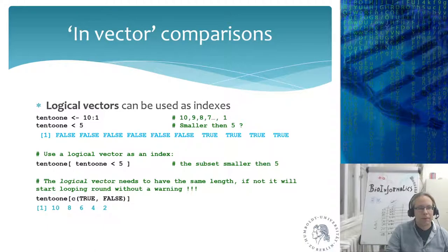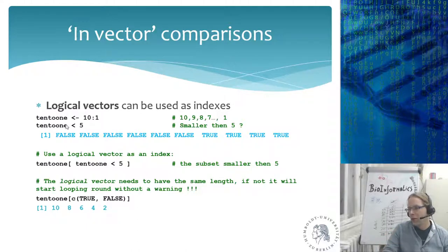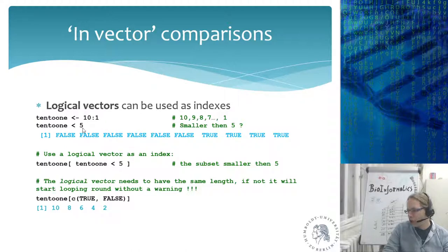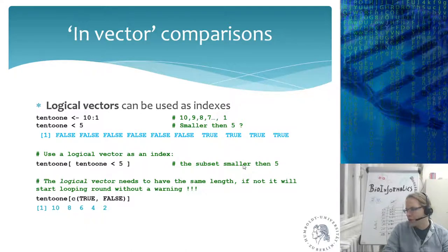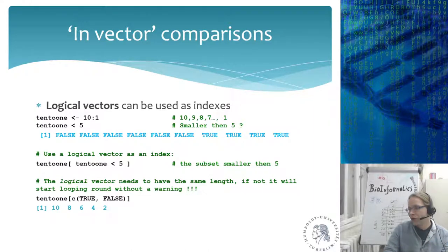You can use logical vectors as an index into another vector. For example, 10:1 < 5 gives FALSE FALSE FALSE FALSE FALSE FALSE TRUE TRUE TRUE TRUE, and you can use this directly to subset the vector and get only elements smaller than 5. This works for matrices too — all the operations that work on vectors also work on matrices.